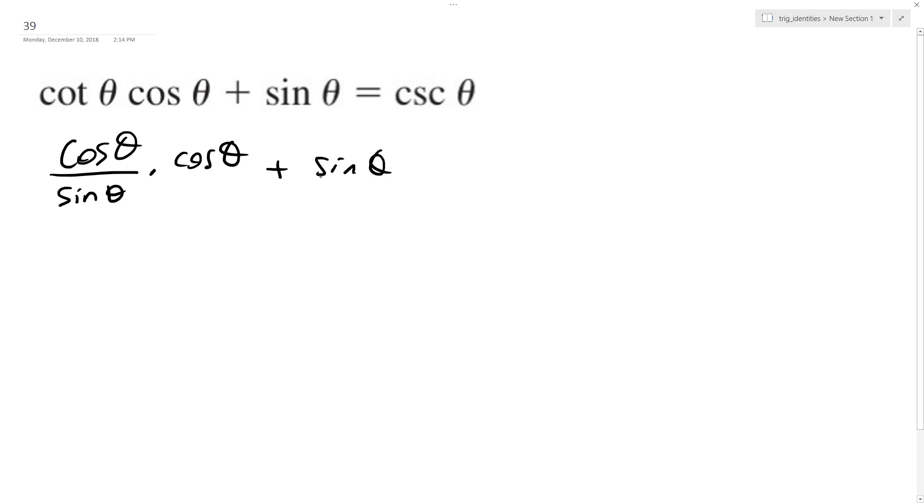So what I can do here is combine these. I can get a common denominator of sine theta. So I'm going to do cosine squared theta over sine theta. I just combine these two.